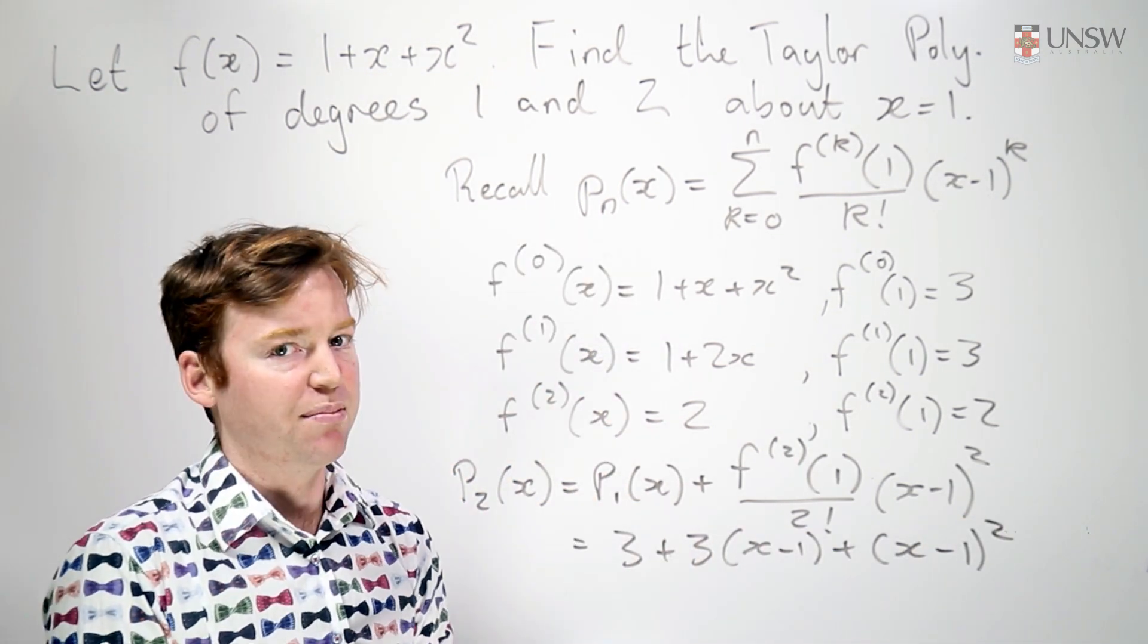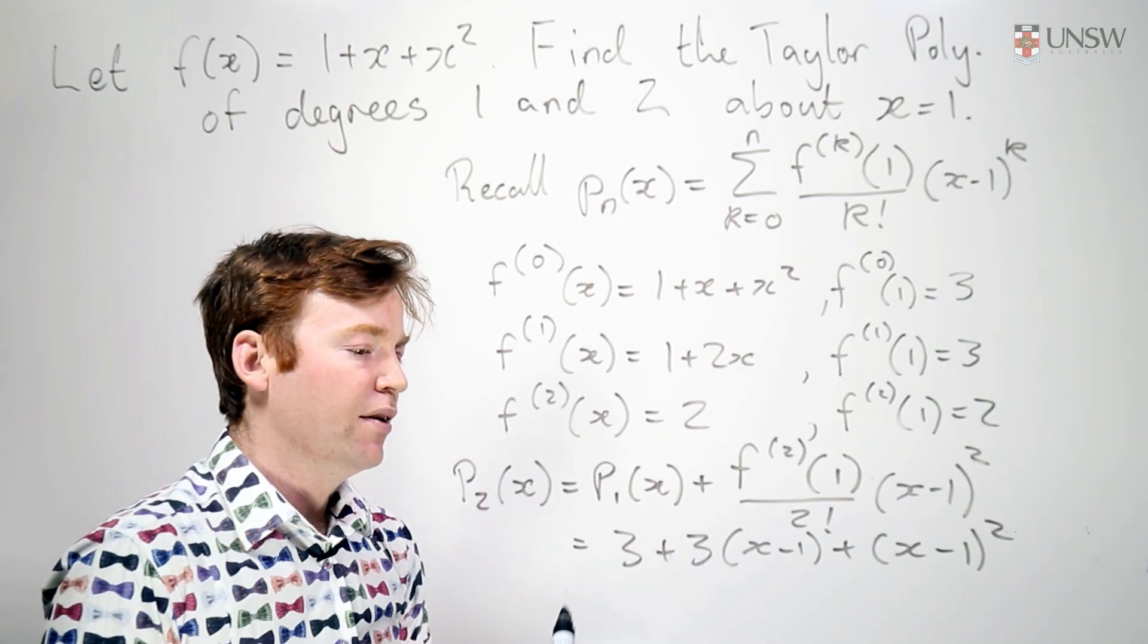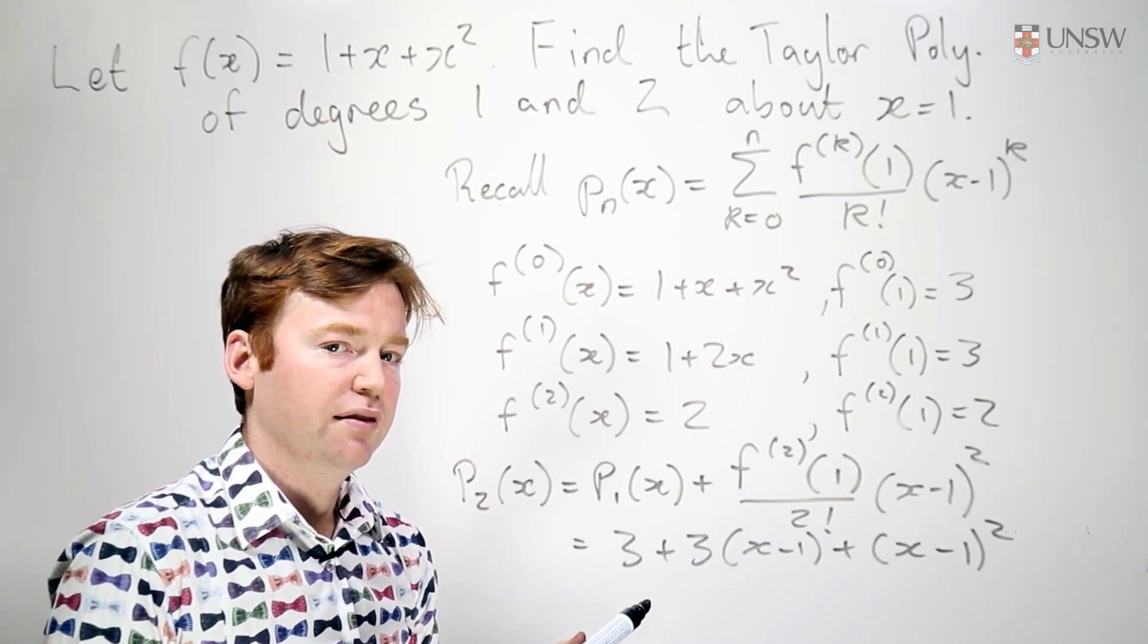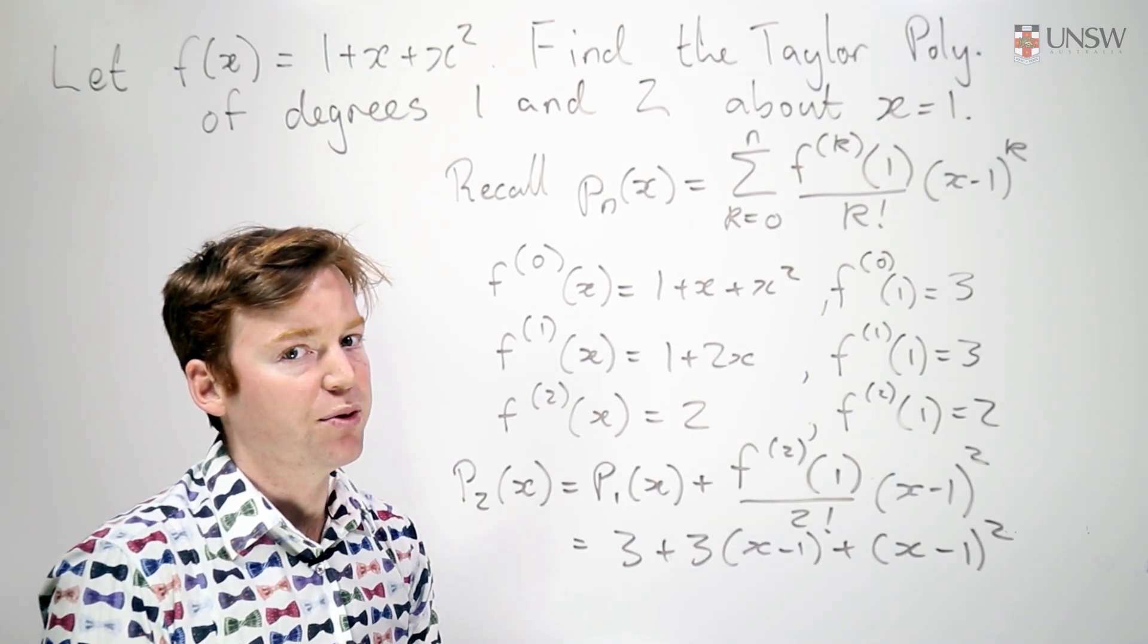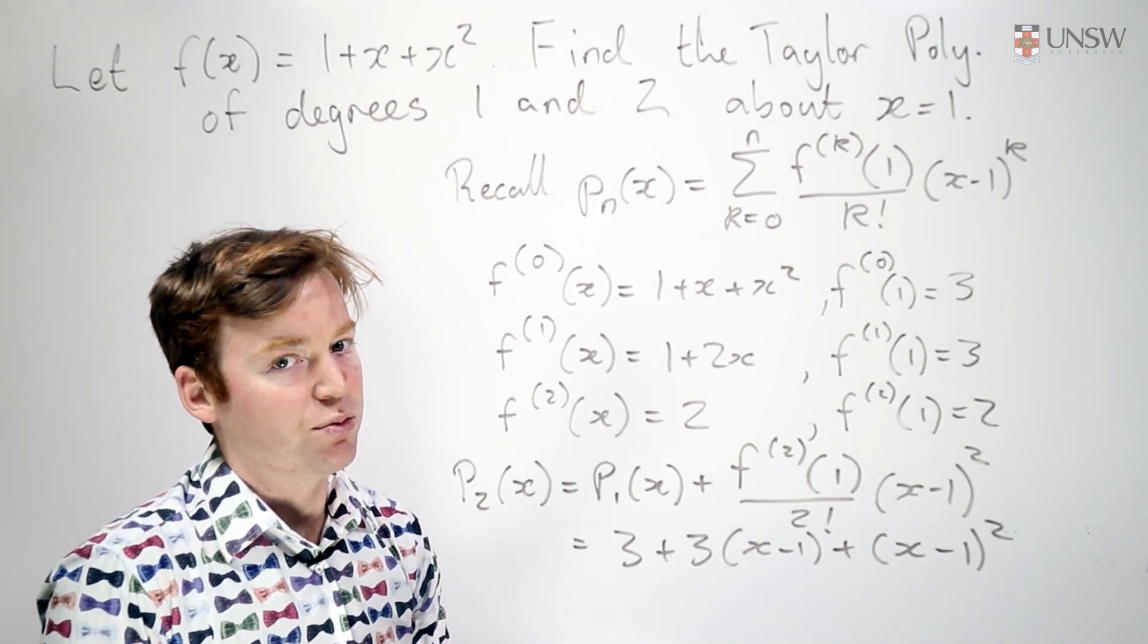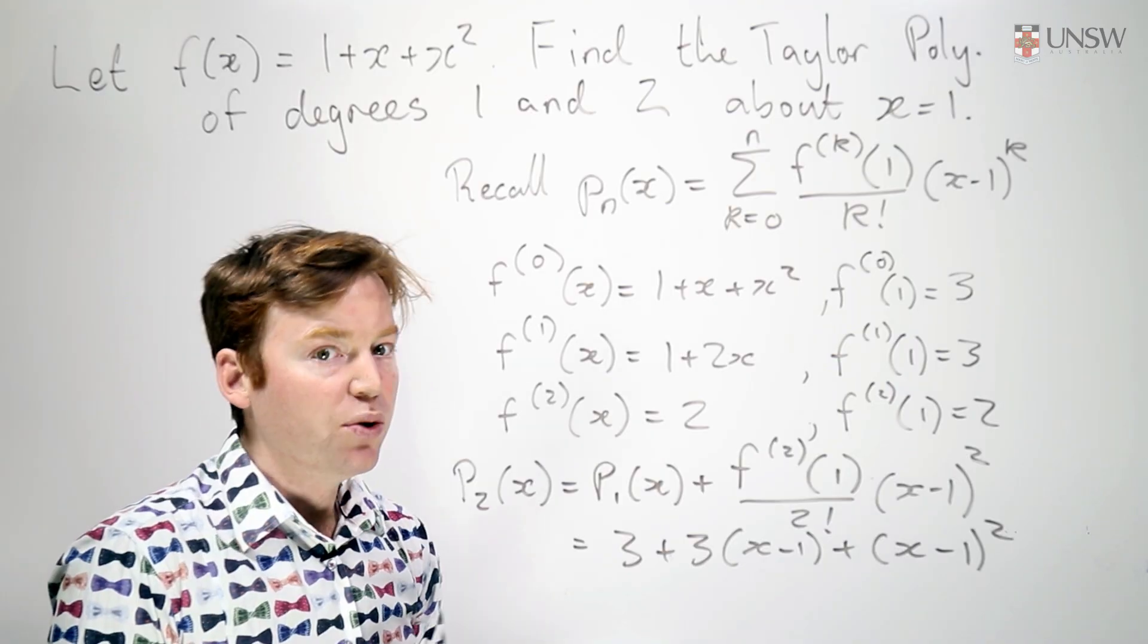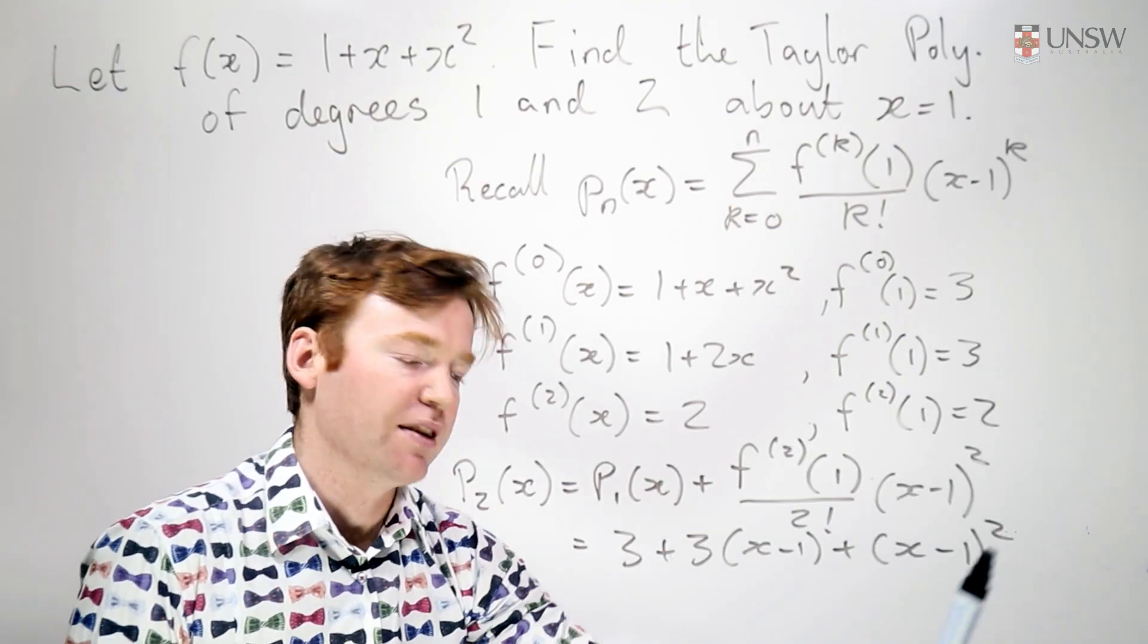Now something very interesting happens if you expand this out. It's exactly f of x, but we call this one the Taylor polynomial for the function at x equals 1 because it's expressed in powers of x minus 1.